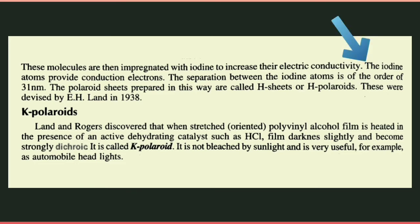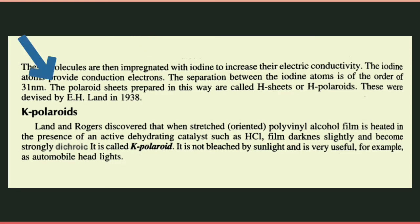The iodine atoms provide conduction electrons. Ye jo iodine ke atoms hain wo conduction electrons provide karta hai. The separation between the iodine atoms is of the order of 31 nanometers. The polarite sheets prepared in this way are called H-sheets or H-polarites.